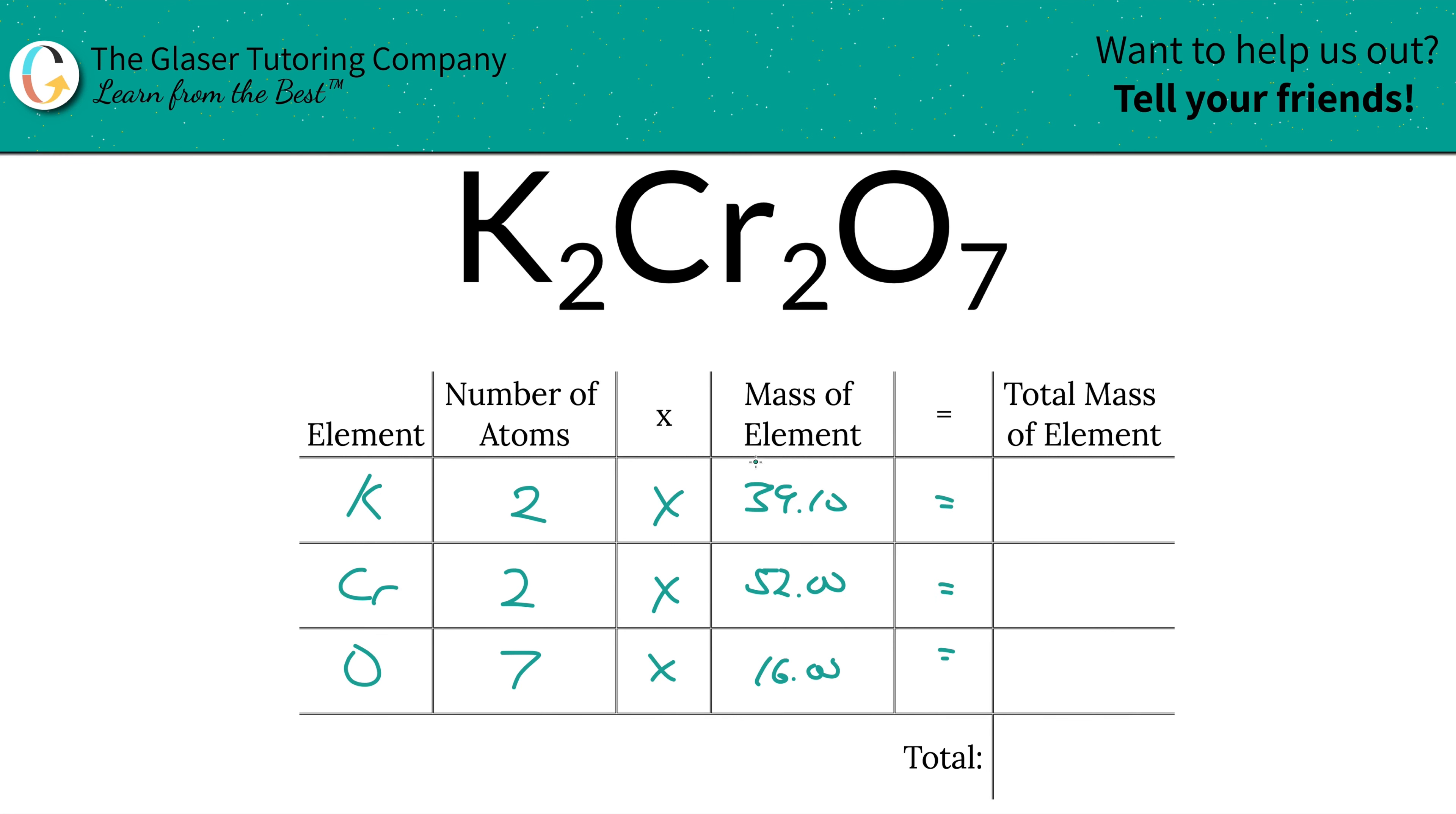Then we're going to now multiply the row across to find the total mass of the element. All right, so the total mass of potassium here is going to be 78.20. Total mass of chromium is going to be 104. And then the total mass of oxygen will be 112.